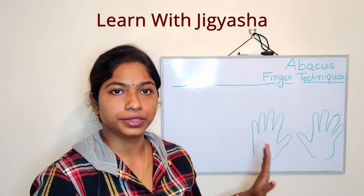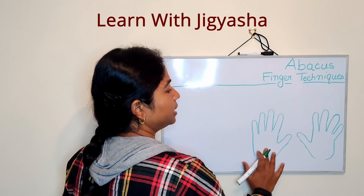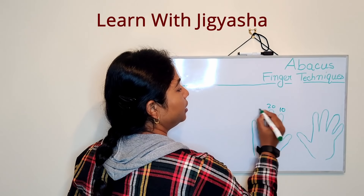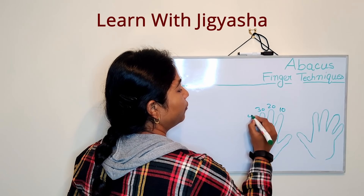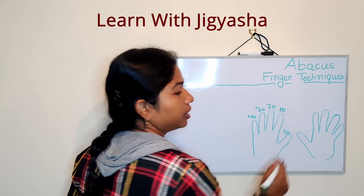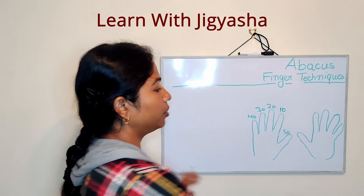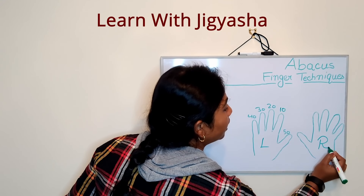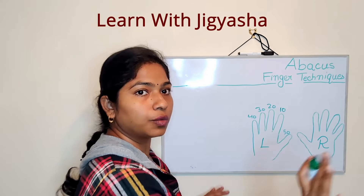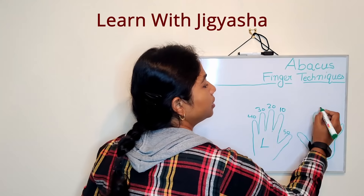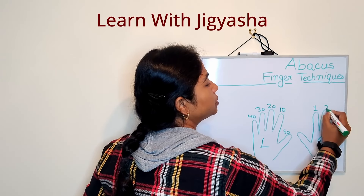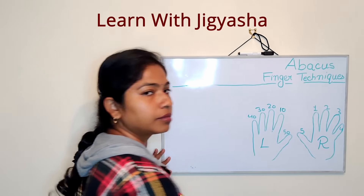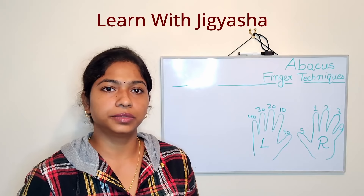I am going to write down the numbers on the drawn hands. On the left hand I write the tens digits: 10, 20, 30, 40, and 50. On the right hand I write: 1, 2, 3, 4, and 5. L is for left and R is for right.